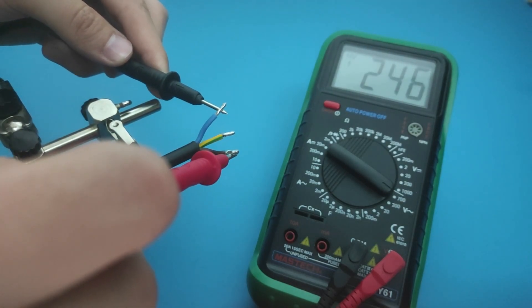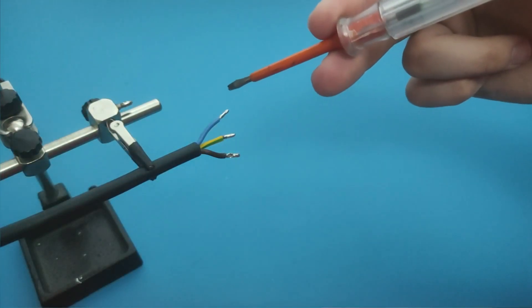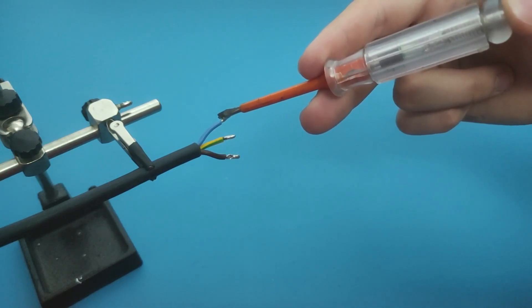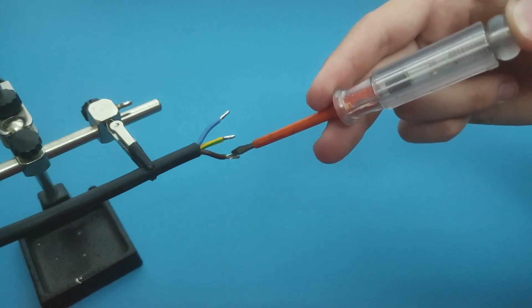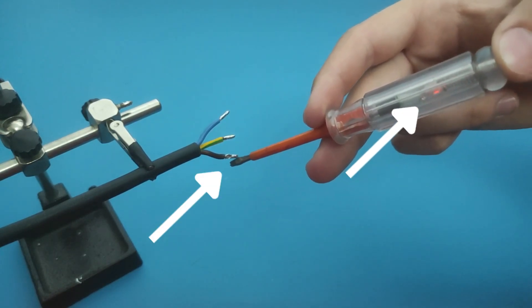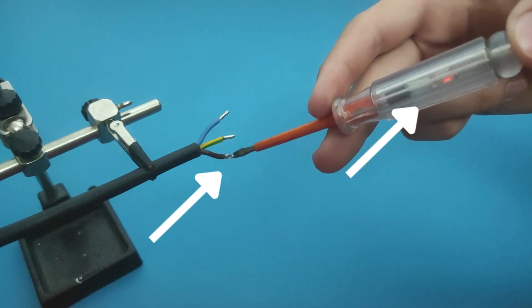Another way you can check which wire is hot is by using a voltage tester. Just touch each wire individually with a voltage tester, and where the light comes on, that means it is a wire that carries electricity or hot wire.